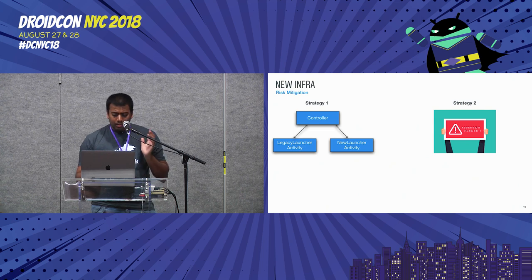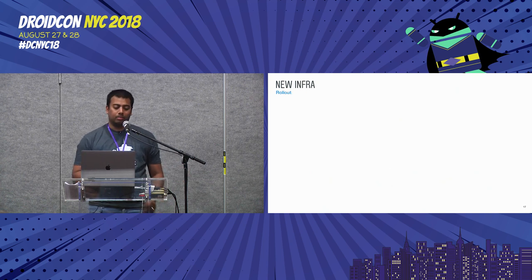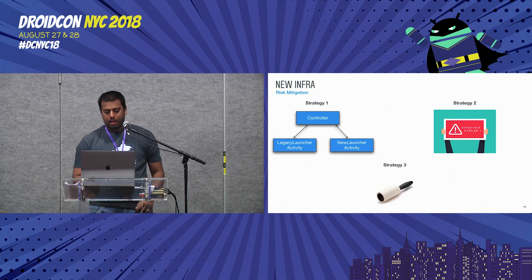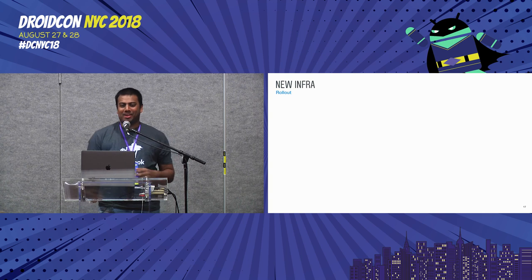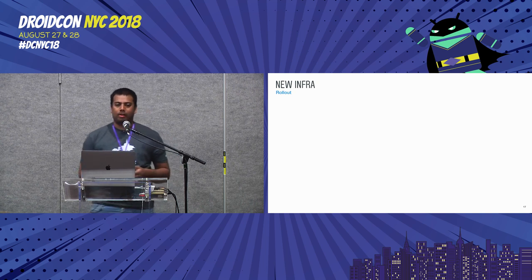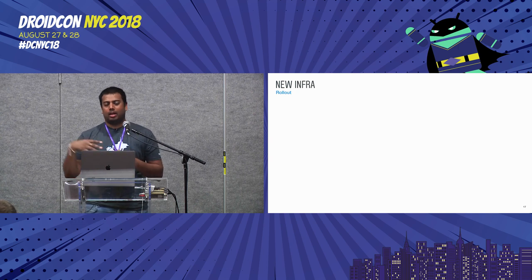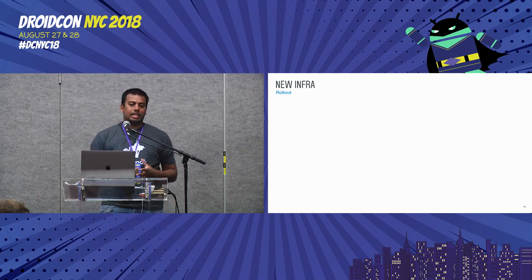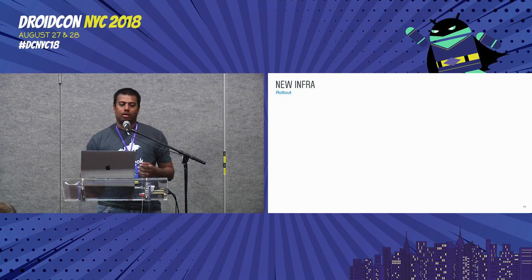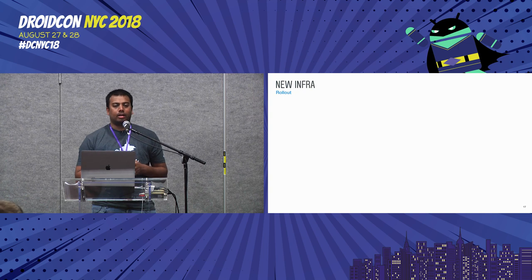Even those two strategies weren't enough — things can still fall through the cracks. So we created a custom lint rule. If a new pull request affected any of the critical classes, I'd be subscribed to those changes and could catch mistakes early and guide engineers in the right direction. Using these three strategies together worked well — we never had significant issues with engineers doing the wrong thing because we closed the doors as much as possible at the right time.